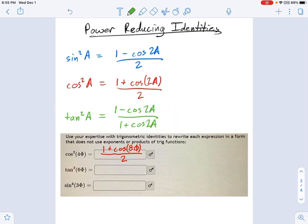And I'm going to say tangent of 6 phi. Well, what's that going to be equal to? That's going to be... Remember, 6 phi is my angle A. So that means this is going to be 1 minus cosine of 2 times what's A. That's 6 phi divided by 1 plus cosine of 2 times 6 phi.